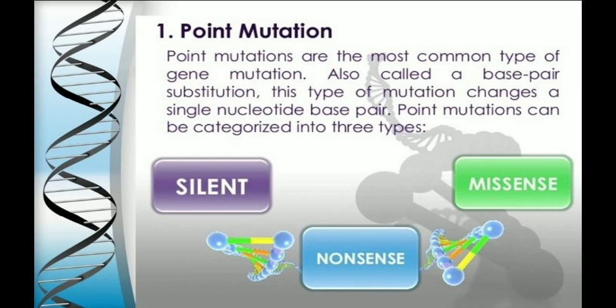Point mutations may be categorized into three types: silent, non-silent, and missense mutations.